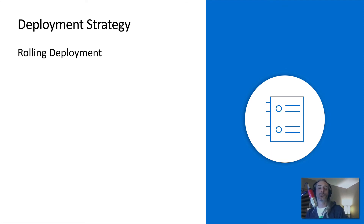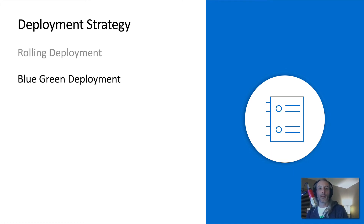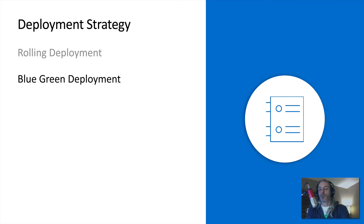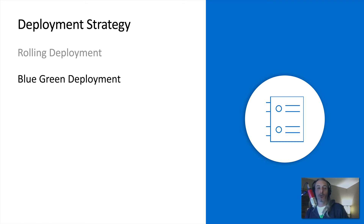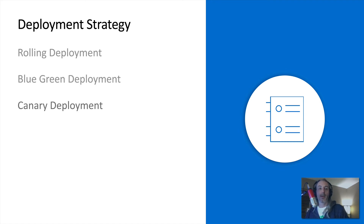The next deployment strategy I want to point out is the blue-green deployment. Here we deploy the updated code into a completely separate environment — not adding new servers into the same environment, but a whole new environment. We monitor that environment for stability and then cut over to the new environment whenever we're satisfied. We essentially have two things running simultaneously, sending traffic to one, and as soon as we're happy based on monitoring and metrics, we do a switch.